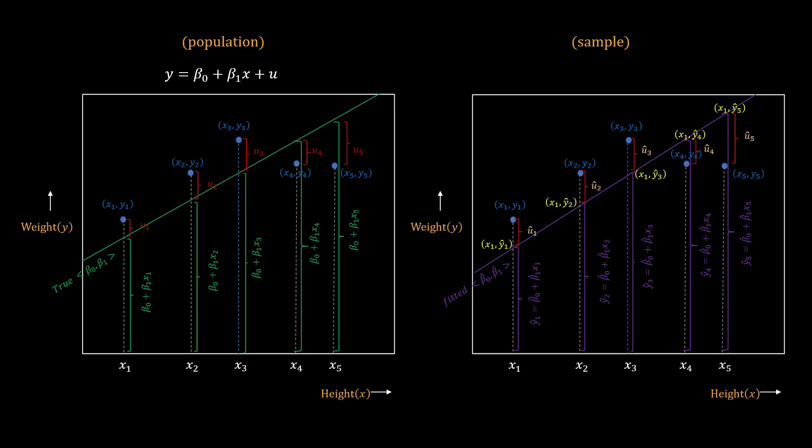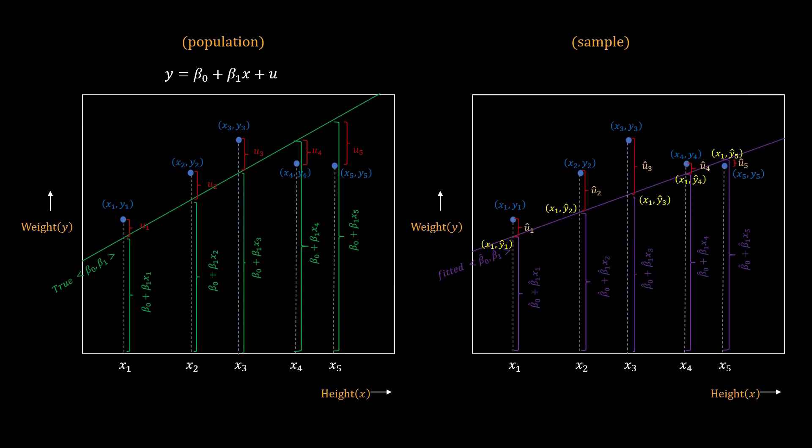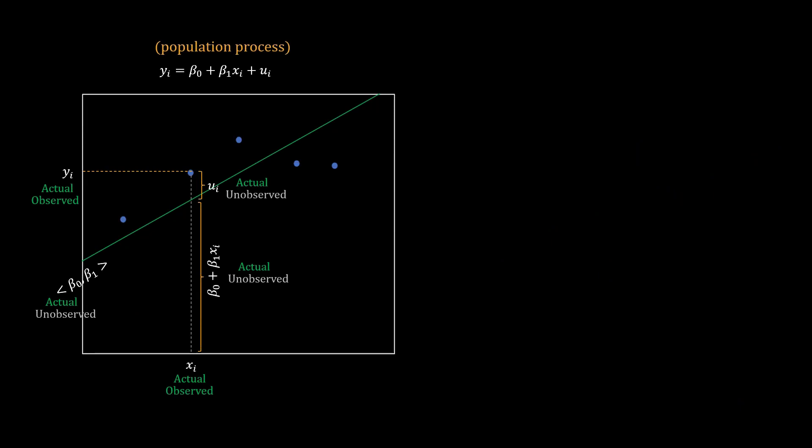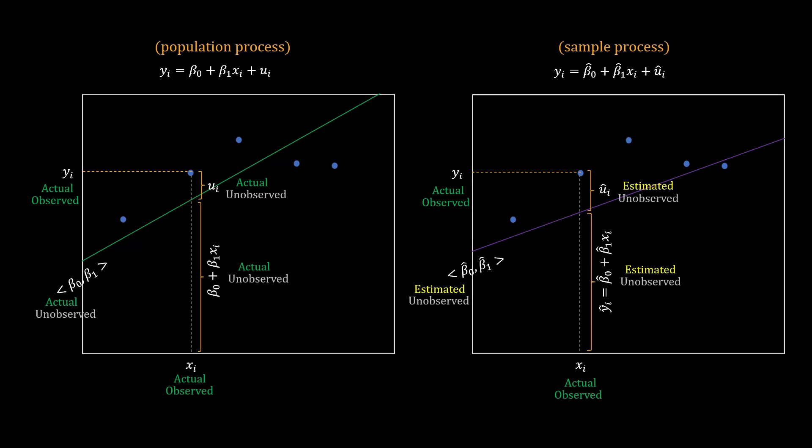Now if the parameter estimates change because a different sample is used or a different estimation technique is used, then all estimates change. Here is a visual that summarizes the distinction between the population process and the sample process for the i-th observation. Pause the video for a minute and understand what's observed and what's not observed, what's actual and what's estimated. Anything that is not observed is obviously estimated. Note that x and y that we observe or measure can come with measurement errors which will differ from the actual values. But we are keeping things simple and assume what is observed is what is actual, at least for now.